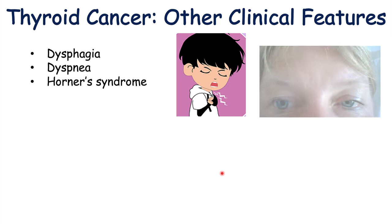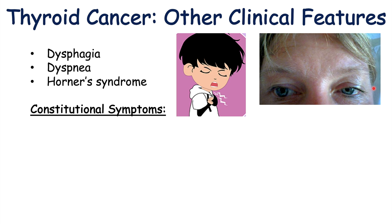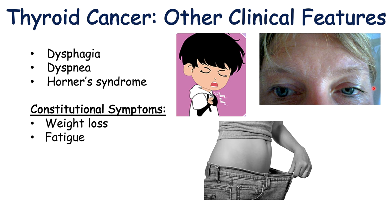Horner syndrome is something else that could occur in thyroid cancer. Horner syndrome involves three signs: miosis or excessively constricted pupil, anisocoria which is different-sized pupils, and ptosis which is a drooping eyelid. Horner syndrome can be caused by things that compress the sympathetic chain. Thyroid cancer can also present with constitutional symptoms including unintended weight loss, fatigue, fever, and night sweats.